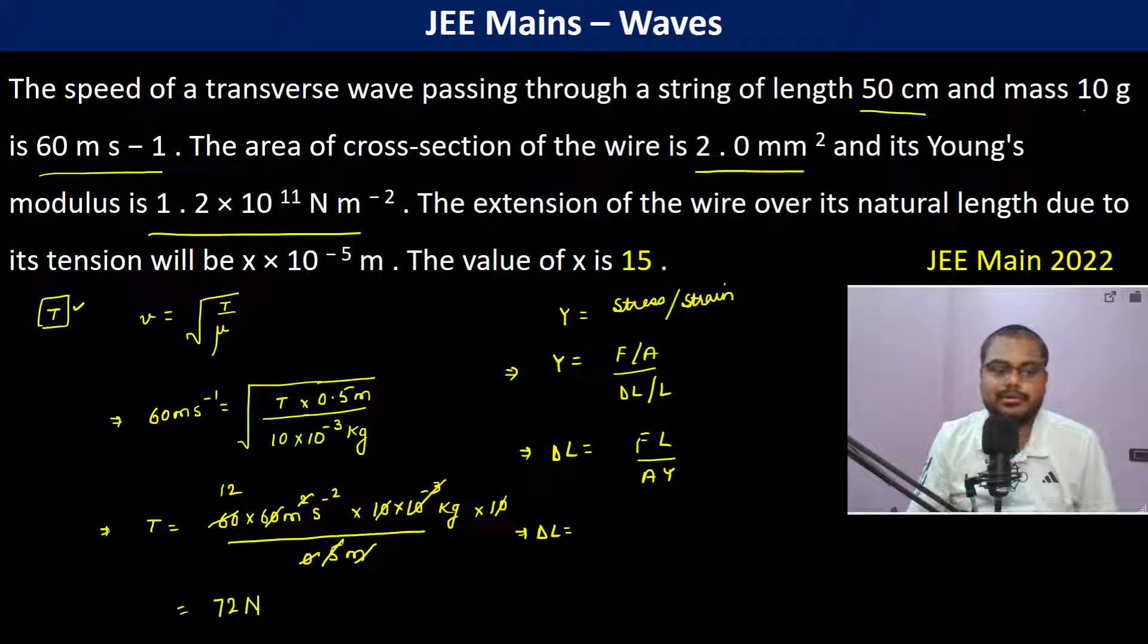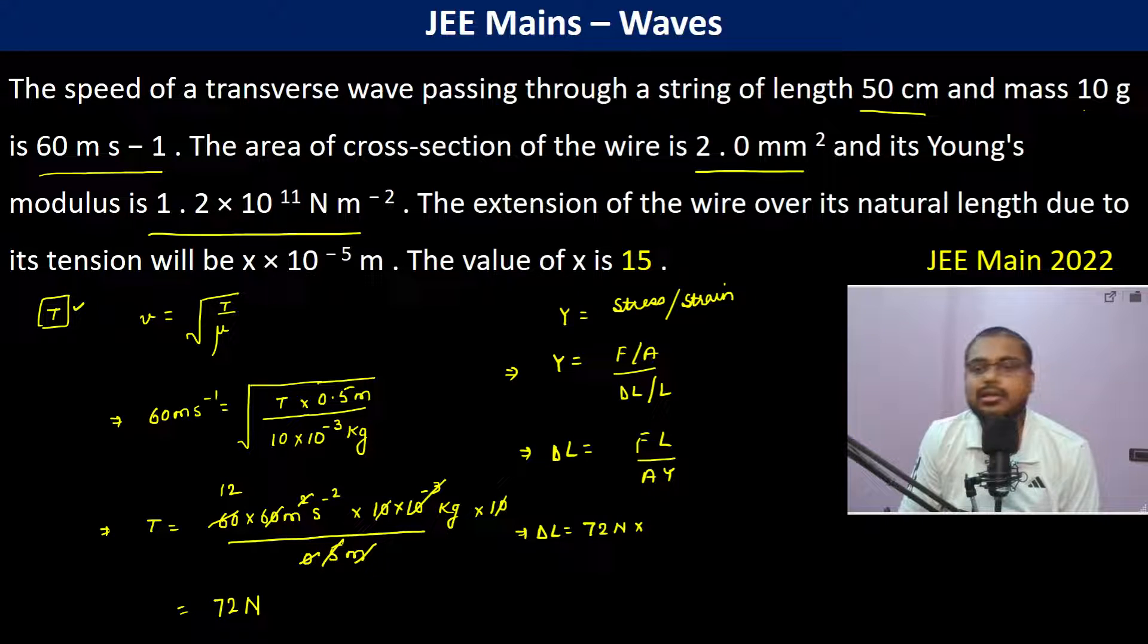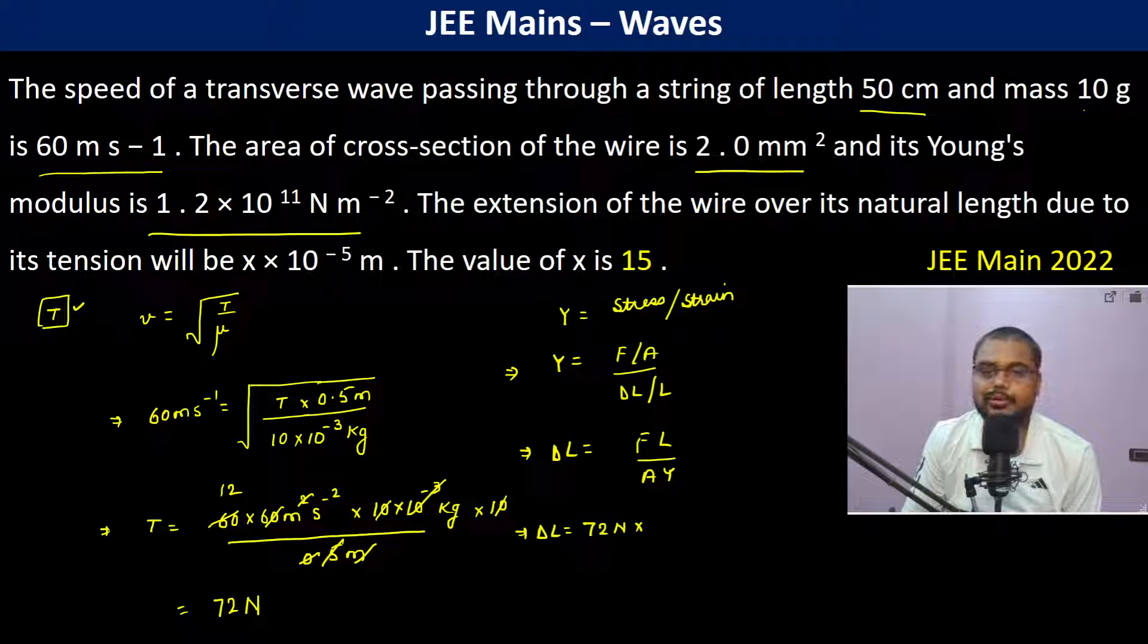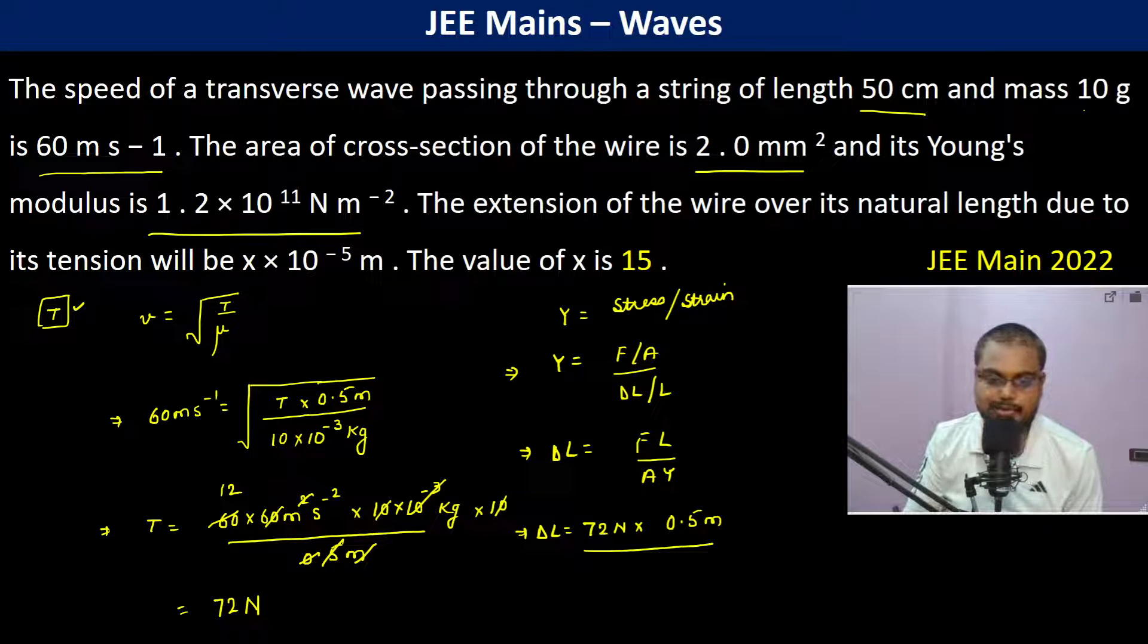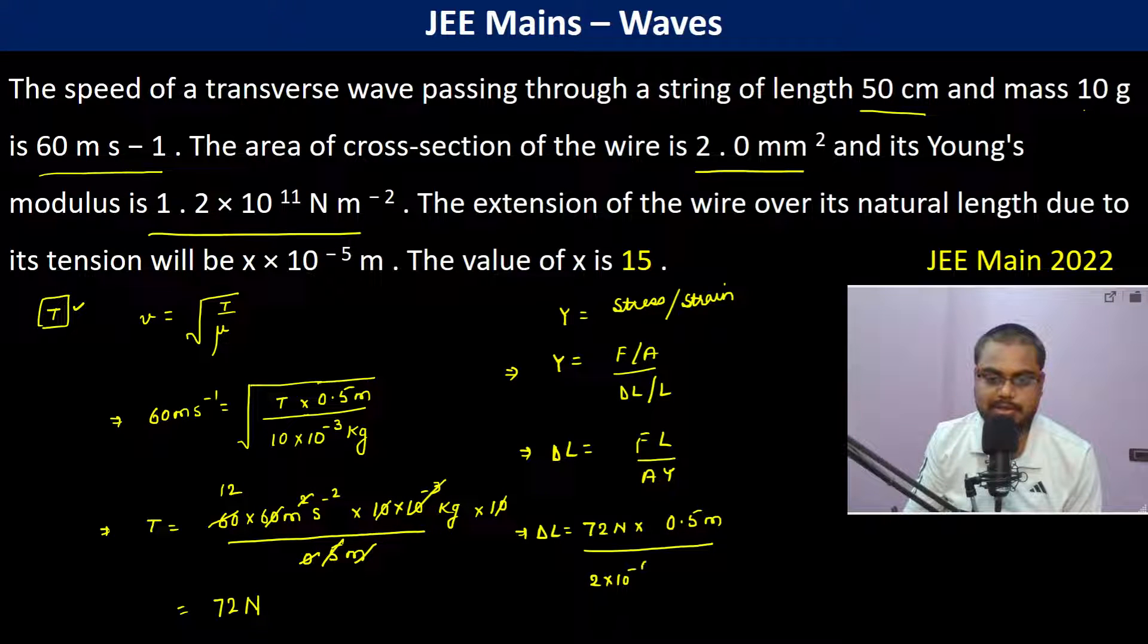Delta L becomes, what is the force? 72 newtons times length of 0.5 meters divided by area of cross-section, which is 2 millimeters, so 2 into 10 to the power minus 6 meters squared, into Young's modulus which is 1.2 into 10 to the power 11 newtons per meter squared.